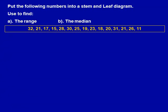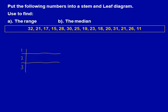Here's our question: put the following numbers into a stem and leaf diagram, used to find A, the range, and B, the median. We start answering this question by drawing a rough stem and leaf diagram. We draw the table where the 1 represents 10s, 2 represents 20s, and 3 represents 30s.